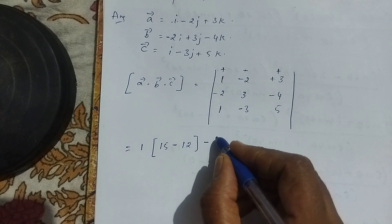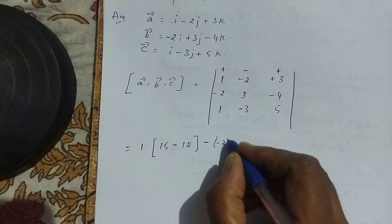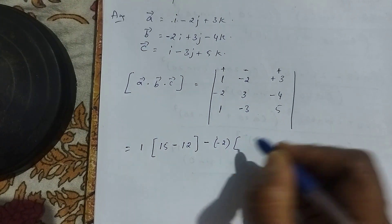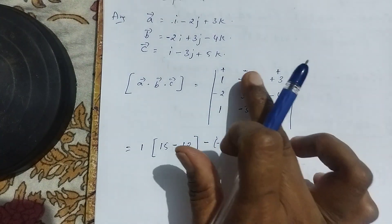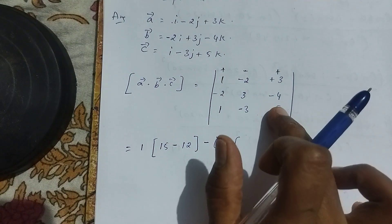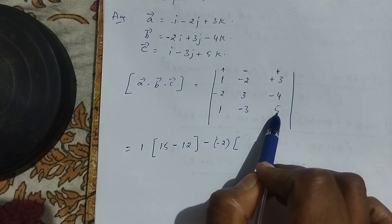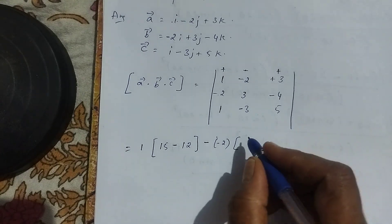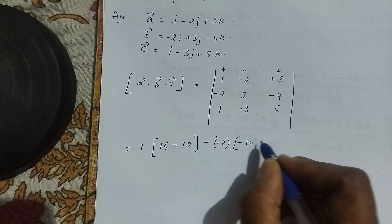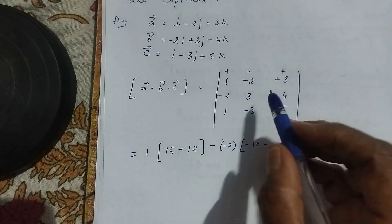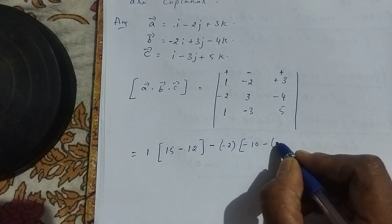For the second element, we apply the minus sign. The element is minus 2. We leave that row and column, then multiply: minus 2 times 5 is minus 10, minus 1 times minus 4 is minus 4. So the second term is minus (minus 2) times (minus 10 minus (minus 4)).